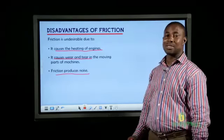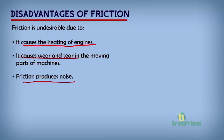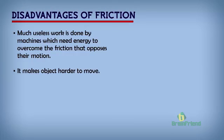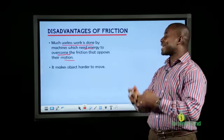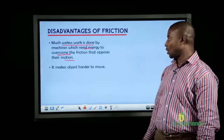Noise or sound is a form of energy, so it's useful work coming out in the form of noise, thereby reducing the efficiency of whatever machine is producing that sound. Still looking at the disadvantages of friction: much useless work is done by machines because friction opposes motion — a machine will need to generate energy to be able to overcome that friction before it can perform useful work. So before it performs useful work, it will need to produce extra energy to overcome friction.